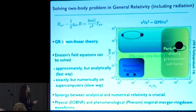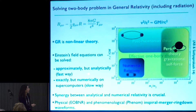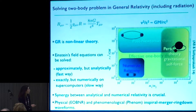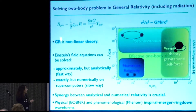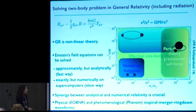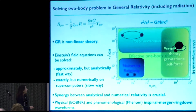We solve the Einstein equation with different techniques. Some are approximate but fast because they are analytical, like post-Newtonian theory or perturbation theory via gravitational self-force, which is an expansion in the small mass ratio. We also use numerical relativity, which solves the Einstein equation exactly on a computer. All these methods have limits of application, so we use a synergy between all of them. We build physical templates in the effective one-body theory, and also fast frequency-domain phenomenological or IMR waveforms.